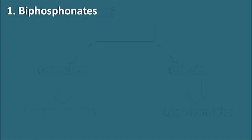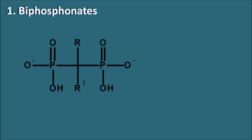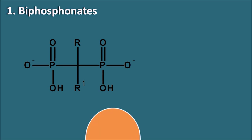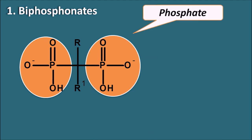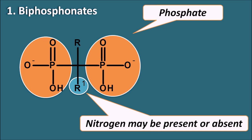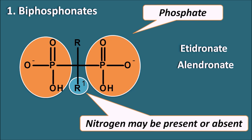The first category is the bisphosphonates. Bisphosphonates have a structure with two phosphate groups, which act like inorganic phosphates and interact with bone resorption. The two phosphate groups are attached to a carbon, which is attached to alkyl groups. These alkyl groups may or may not contain nitrogen, and based on that, bisphosphonates are classified. Bisphosphonate names end in '-dronate', such as etidronate and alendronate.